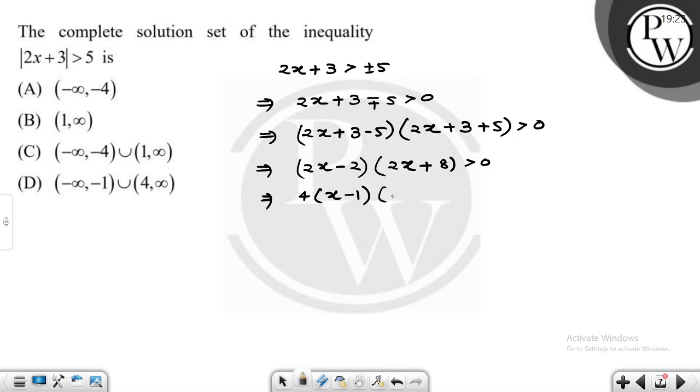So we have x minus 1 and x plus 4. Now if we look at x, then x is less than minus 4 or x is greater than 1. So the solution is from minus infinity to minus 4 union 1 to infinity. That means the correct answer is option C.